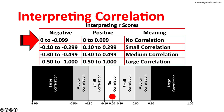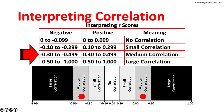Interpreting correlation coefficient effect size scores: no correlation is an R score between negative 0.099 and positive 0.099. Small correlations are between negative 0.10 to negative 0.299, or between 0.10 to 0.299. Medium correlations are between negative 0.30 to negative 0.499, or between 0.30 to 0.499. Large correlations are between negative 0.50 to negative 1, or between 0.50 to 1.